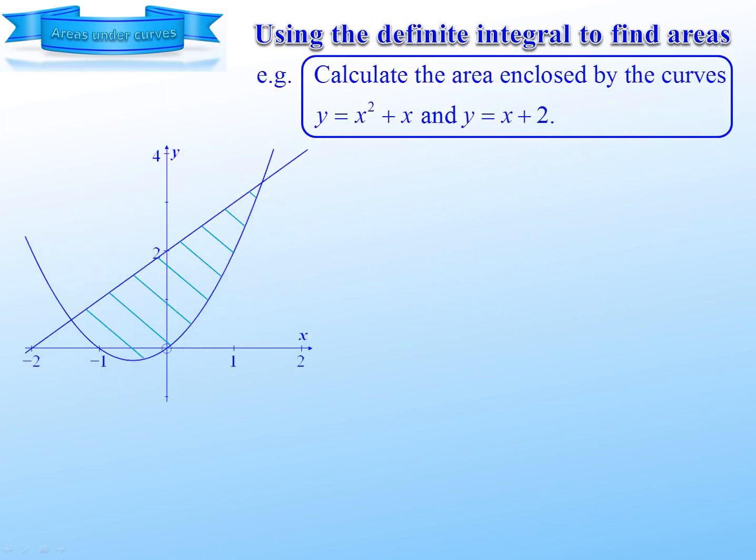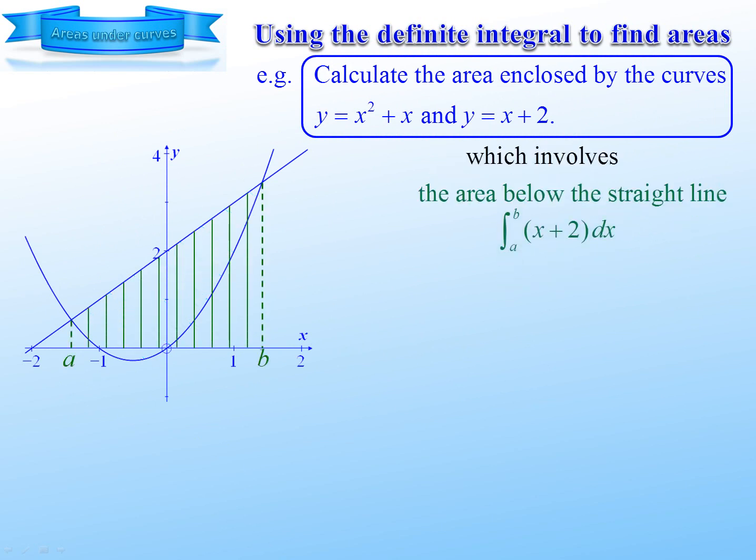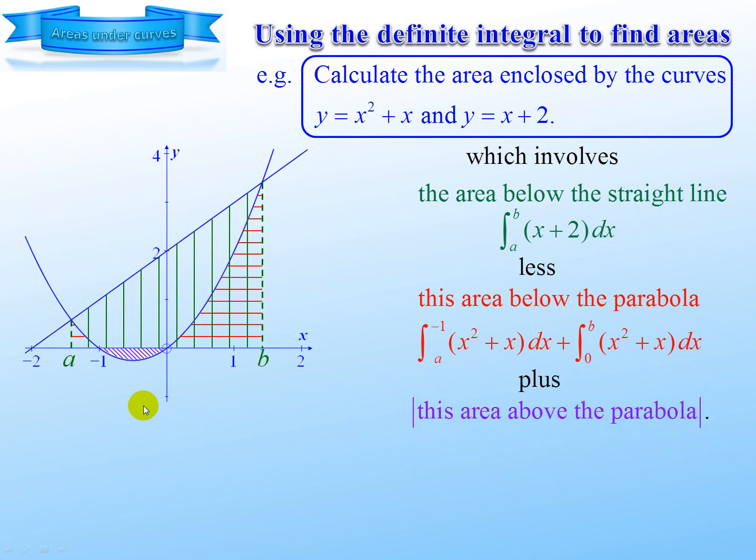Now to find the area between a curve and a straight line. So it's the area below the straight line, less these two areas below the parabola, plus this area between the parabola and the x-axis. Absolute value, and it's actually a negative value. So instead of having the absolute value signs, we attach the negative sign. So it's going to be plus negative.